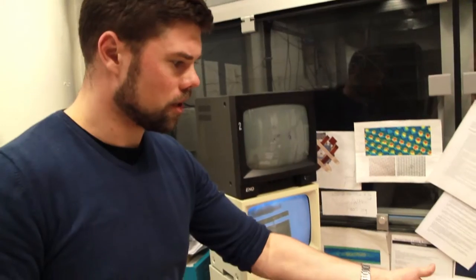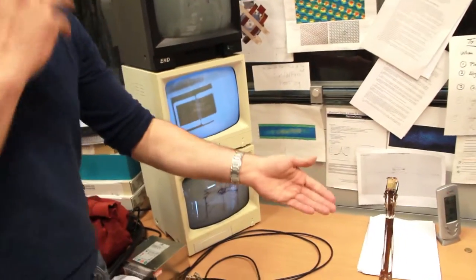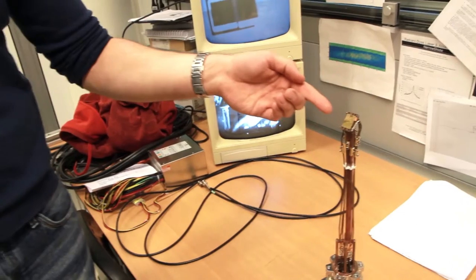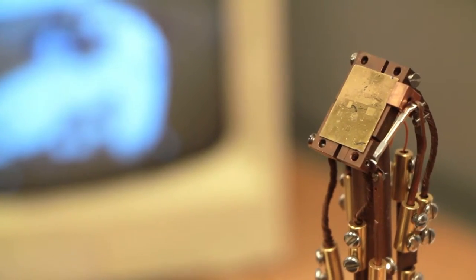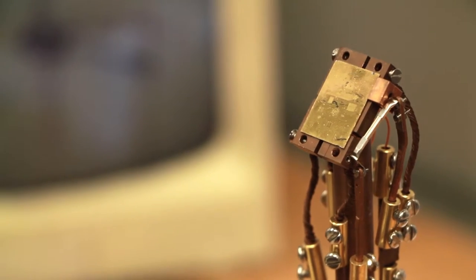And here you can see how this, this is an old version, how such a chip looks like. So we are trapping the atoms very close to the surface, a few microns, and then we want to manipulate them with light. That's our approach.